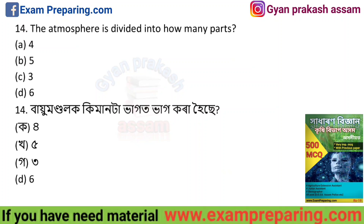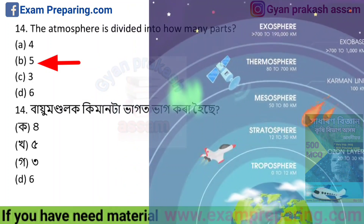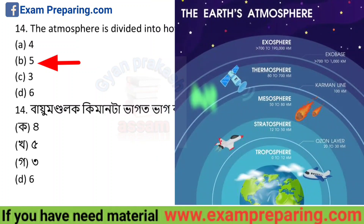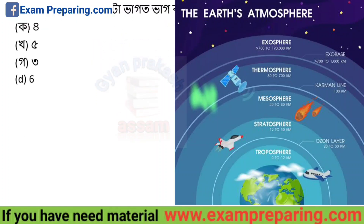The atmosphere is divided into how many layers? The answer is five layers: troposphere, stratosphere, mesosphere, thermosphere, and exosphere.